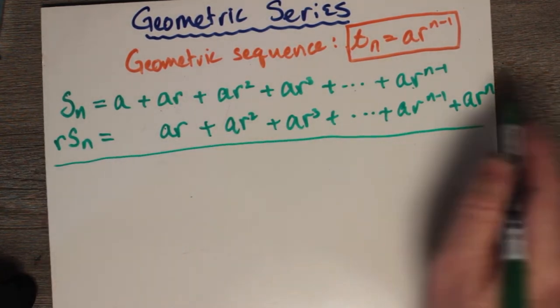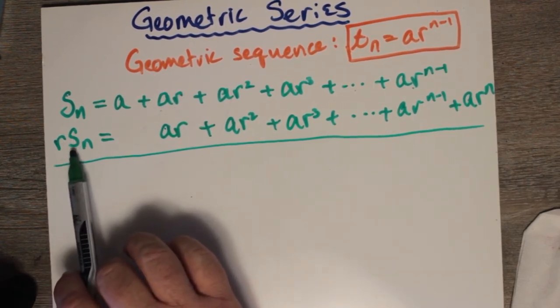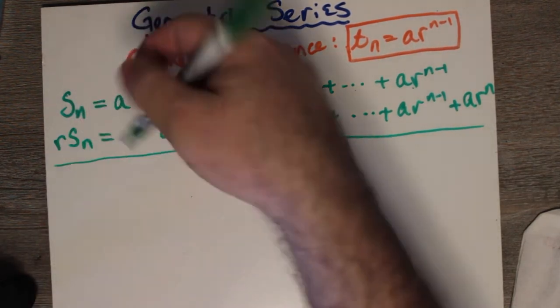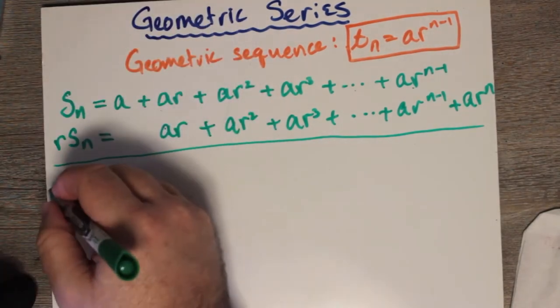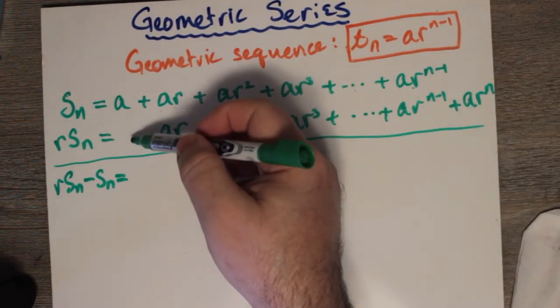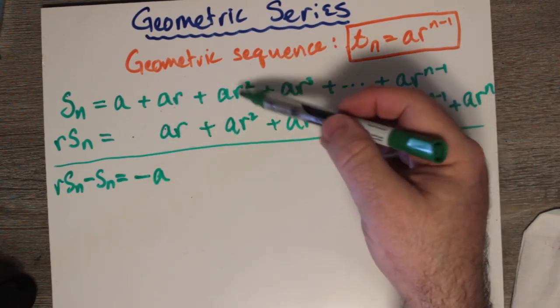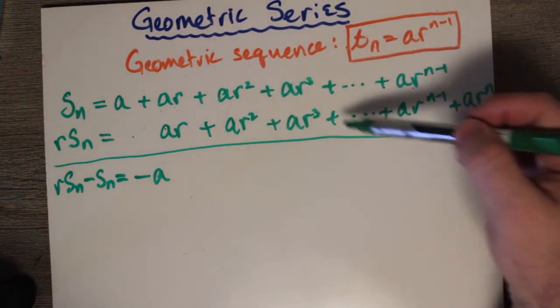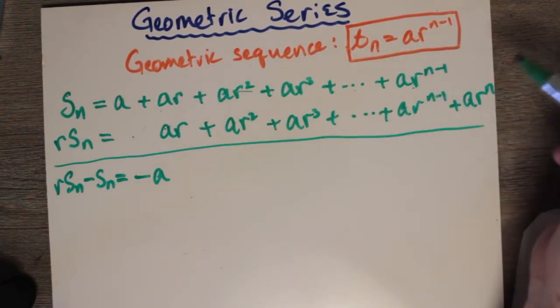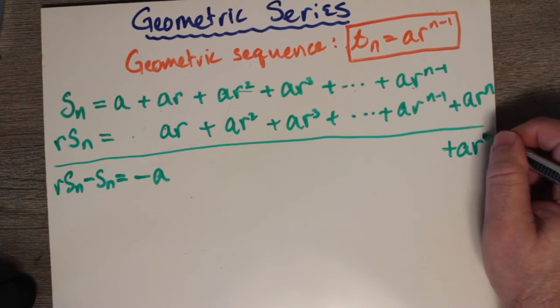So now, we are going to subtract, and we're going to subtract in this direction. You can imagine r times sn to be a bigger number than sn. So, we're going to subtract the bottom minus the top. So, we're going to go r sn minus sn. And we're going to put an equal sign. So, 0 minus a is negative a. ar minus ar is 0. ar squared minus ar squared is 0. All of these terms just subtract out. They go to 0. Even this subtracts out. Everything up to here, all of this subtracts out and cancels out. And we're left with nothing more than ar to the n minus 0, which is just ar to the n.